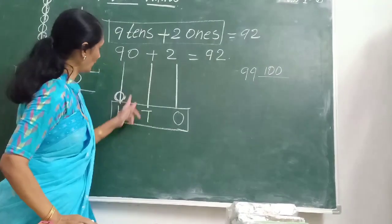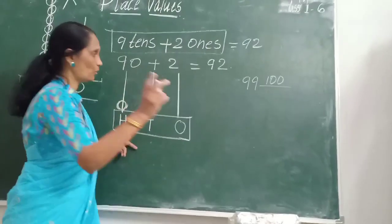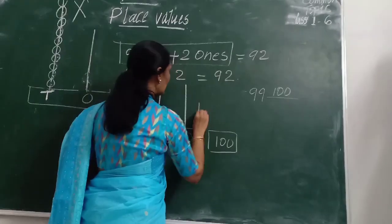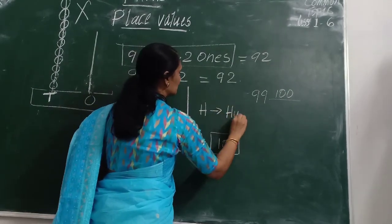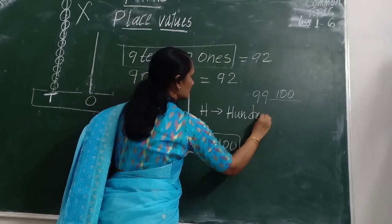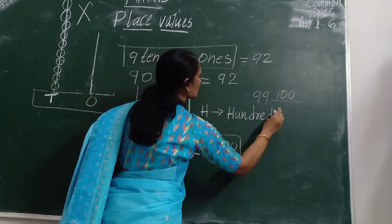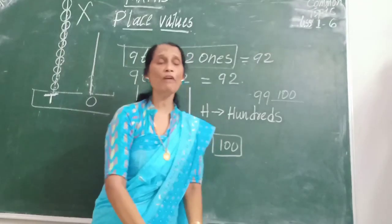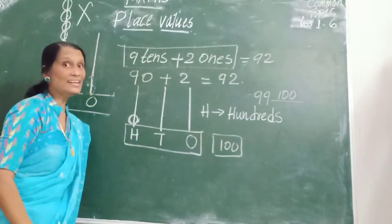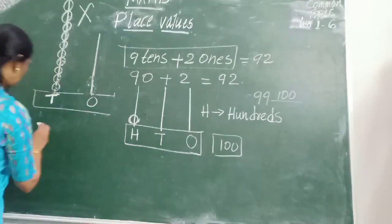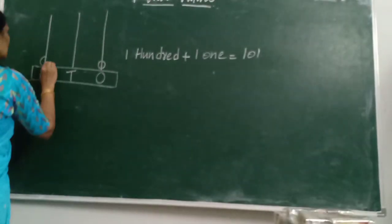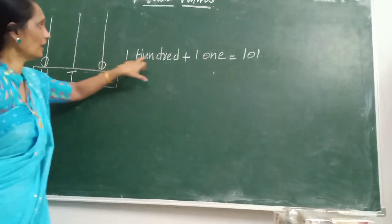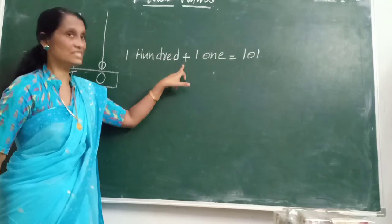In this one, how many 100s are there? Only 100. This is 100. H means 100. H represents 100. I want to show now 101. So, 100 and 1. 100 plus 1.